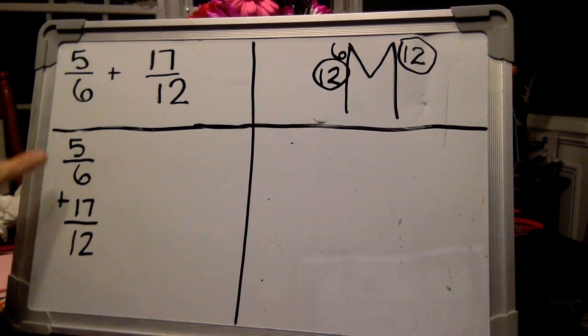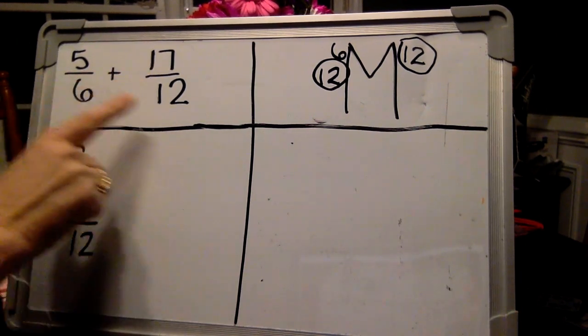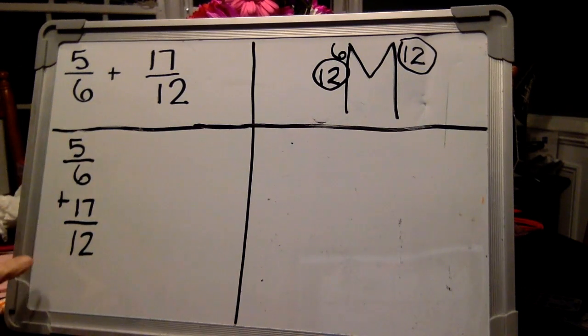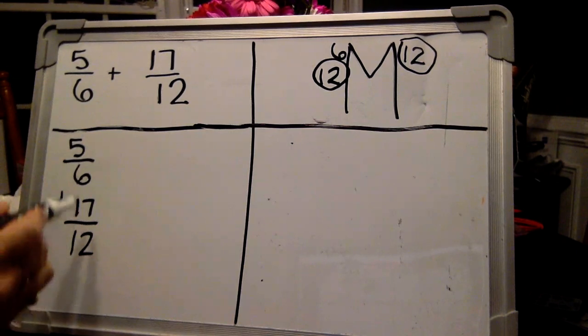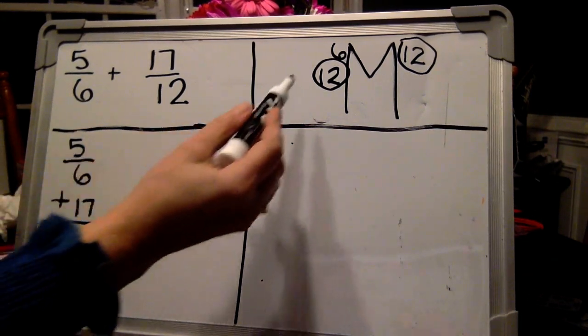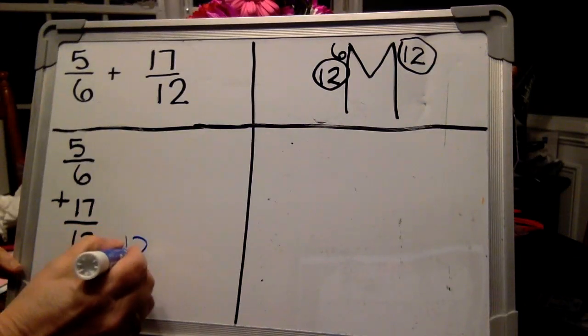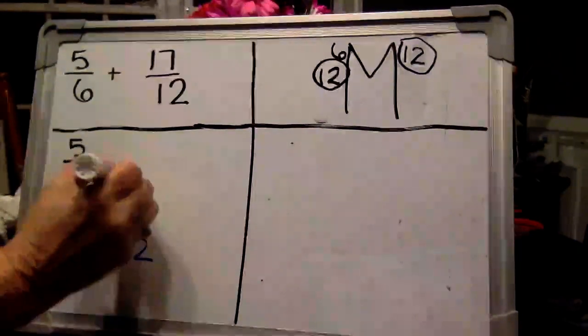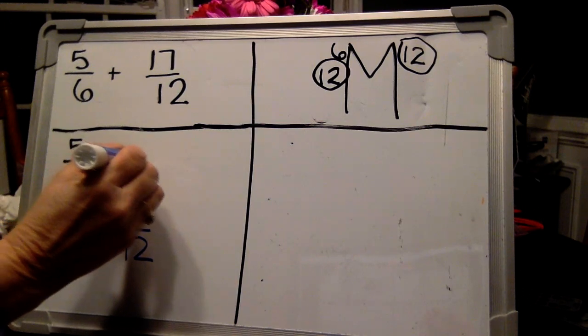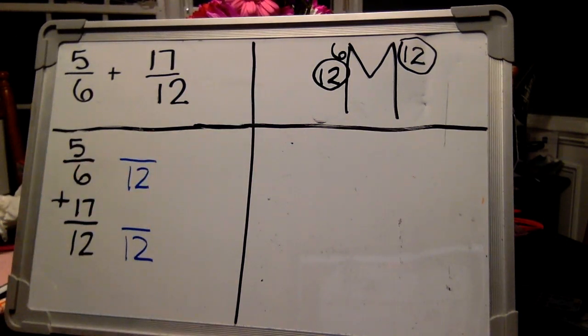Did you get this? Remember, we wrote the original fractions up and down. Now comes the tricky part. We need to change these denominators so that they both are twelves. I'm going to use a different color like last time so you can see it a little bit better. They both need to be twelve.